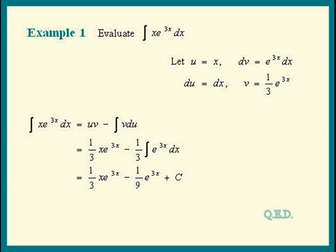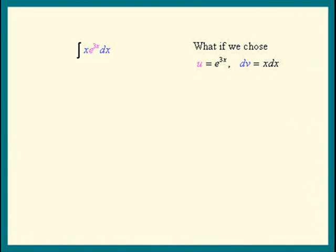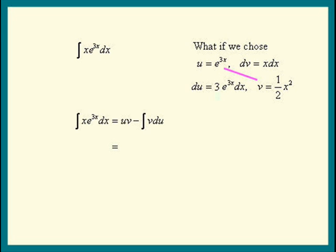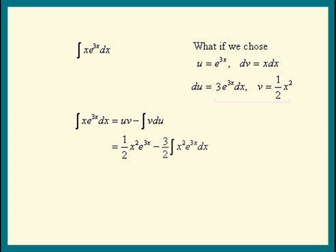Let's see what happens if we had picked u to be e to the 3x and dv to be x dx. If u is e to the 3x, then du is 3 times e to the 3x dx and v is 1 half of x squared. The integral becomes u times v — 1 half x squared e to the 3x — minus v times du, giving us 3 over 2 times the integral of x squared times e to the 3x. The integral got harder, which means we made the wrong choice.